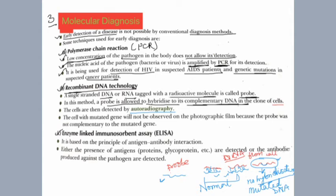The cell with the mutated gene will not be observed on the photographic plate — it will not appear on the film. Because the radioactive probe did not attach to the mutated DNA, the mutated gene will not be observed. So the probe was not complementary to the mutated gene, and it will not be visible. In this way we can find out the mutated gene — some mutation has occurred — and understand there are chances of disease.